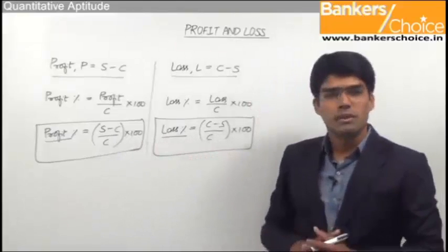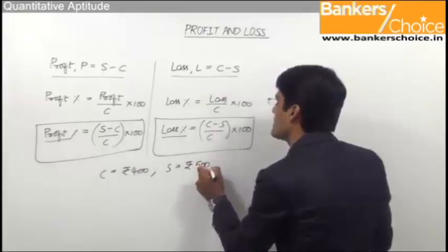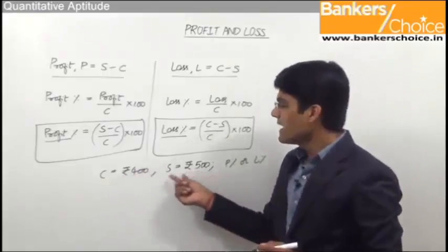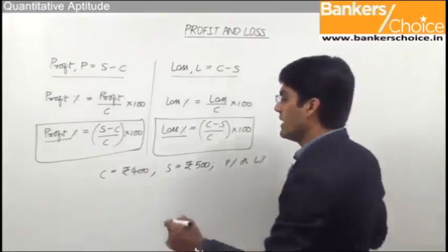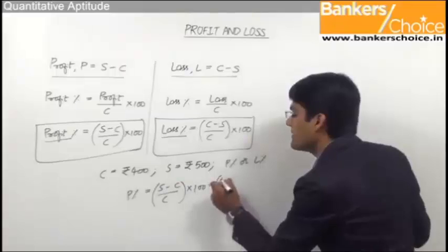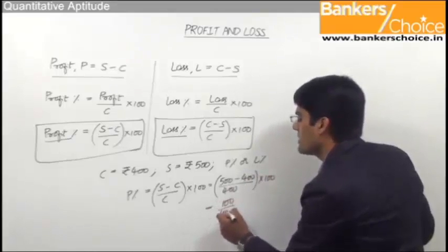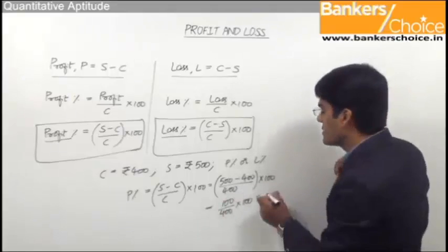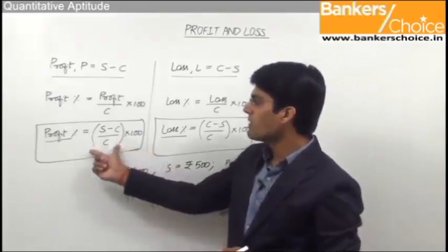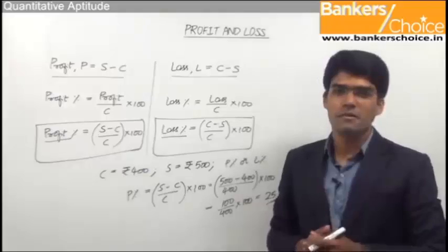Let's apply these formulas: if the cost price of an article is 400 rupees and the selling price is 500 rupees, since the selling price is more than the cost price it is a profit. Profit percentage equals (S minus C) divided by C, multiplied by 100, which is (500 minus 400) divided by 400, multiplied by 100. This equals 100 divided by 400, multiplied by 100, which is 1 divided by 4 multiplied by 100, giving 25 percent profit.